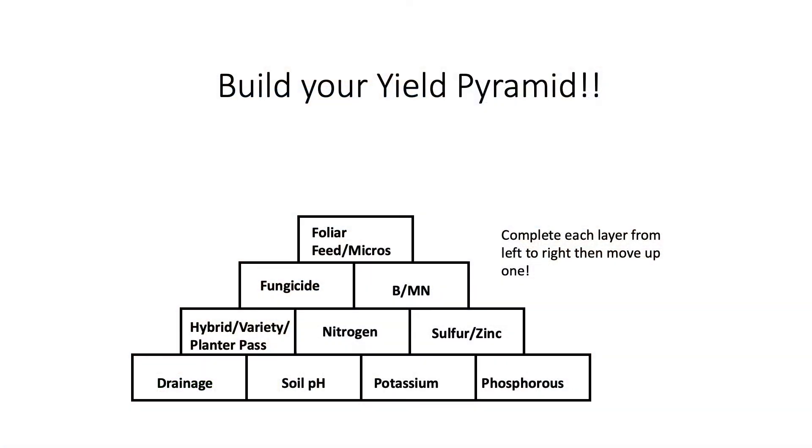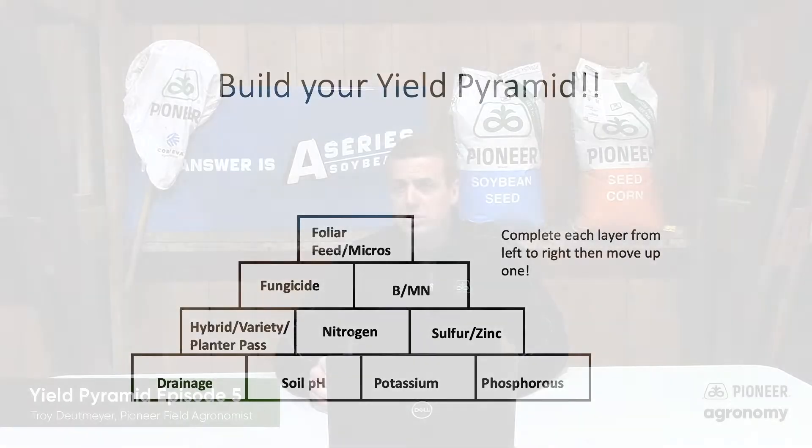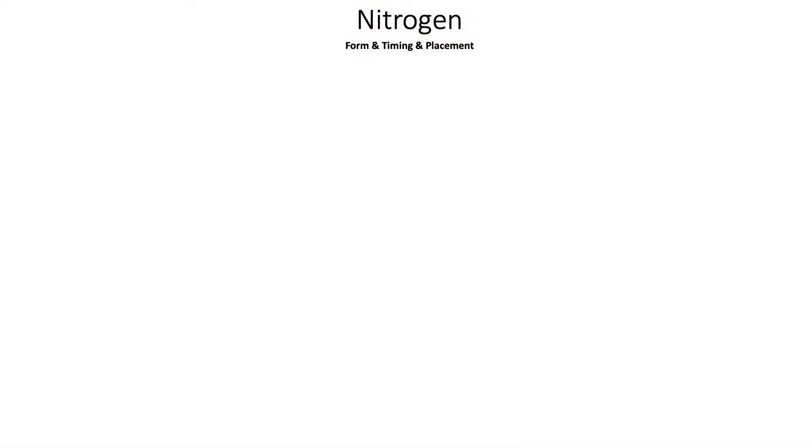We have some growers with nitrogen use efficiencies as low as 0.6 to 0.8 units of nitrogen per bushel of corn in a 250-plus bushel yield environment. Others may be using 1 to 1.2 units of nitrogen per bushel depending on how well they have the foundation of their pyramid taken care of. Other factors include the source of nitrogen they're using and the timing and incorporation of that nitrogen.